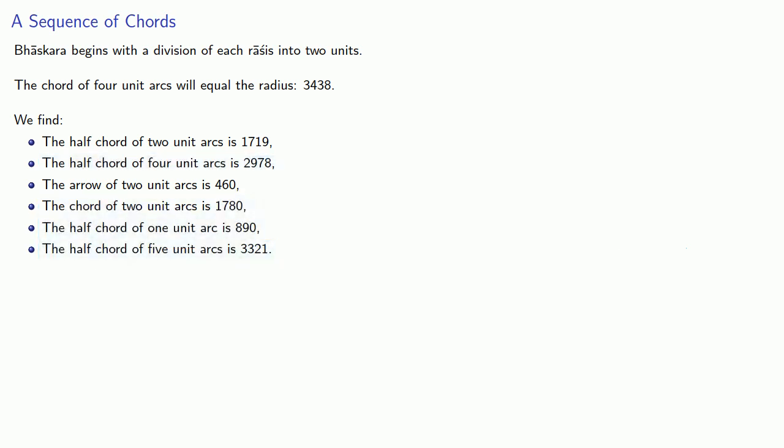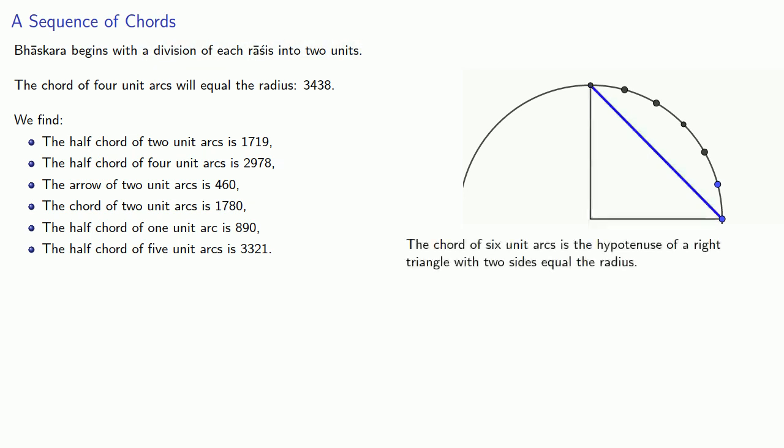So the chord of six-unit arcs, remember it's two units per racis, this is three racis. Well, that's the hypotenuse of a right triangle with two sides equal to the radius. And so the chord length satisfies the right triangle theorem. And we solve.